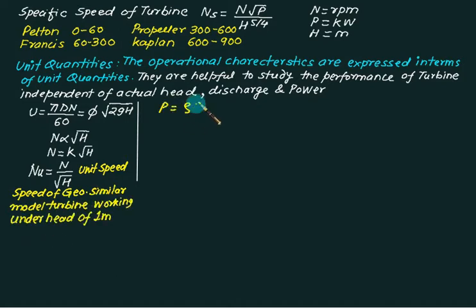In case of power, we have the formula equal to ρ into g into q into h. So we can replace q as π by 4 d square. So we have ρ into g,